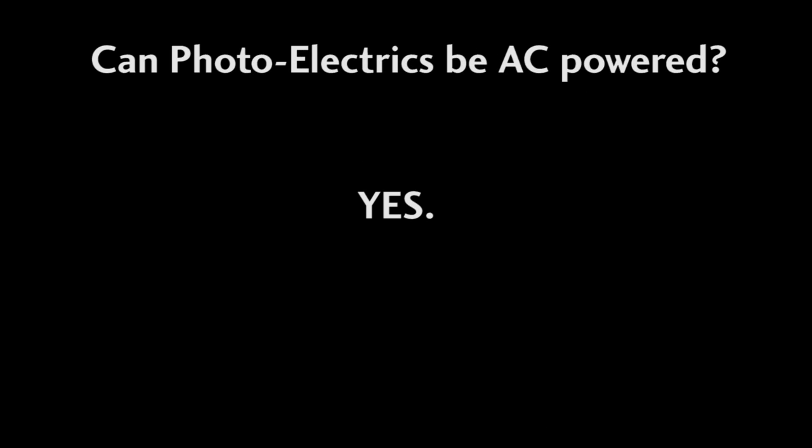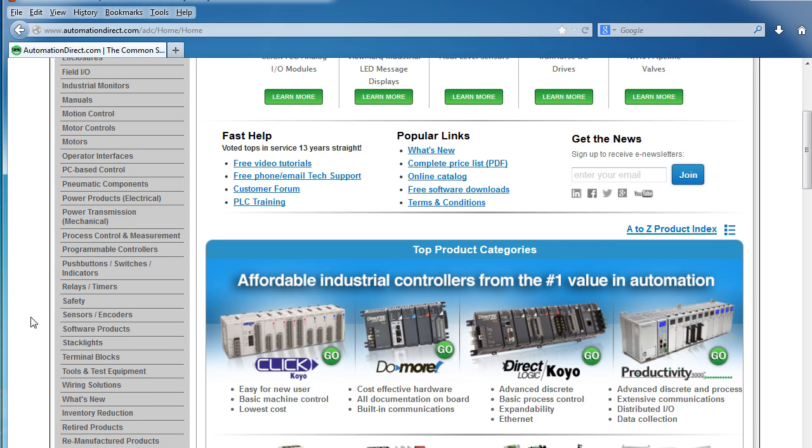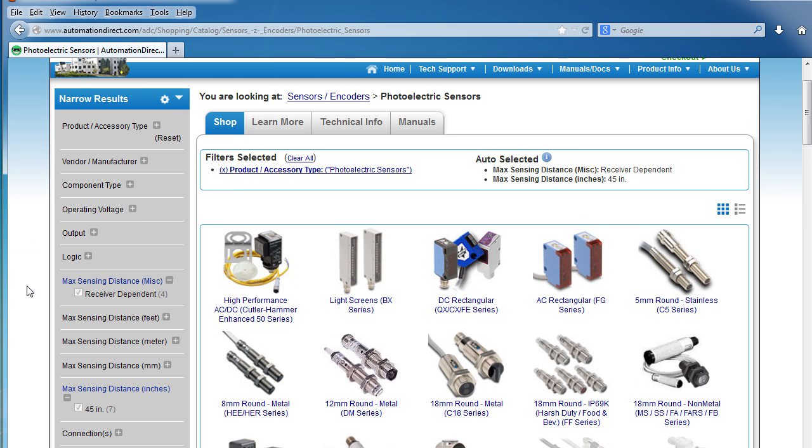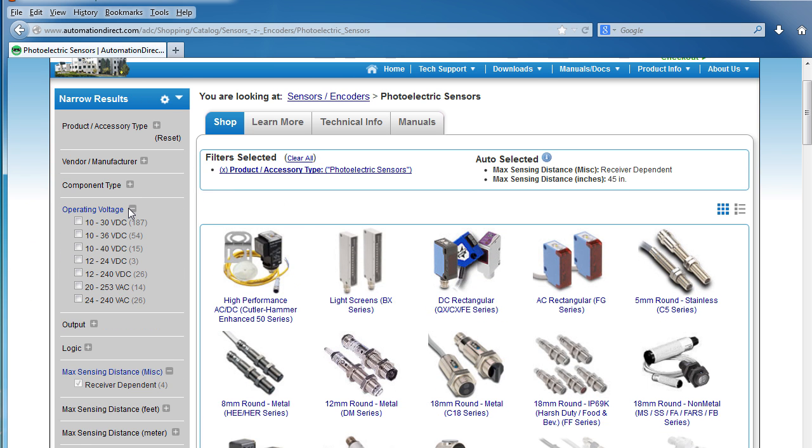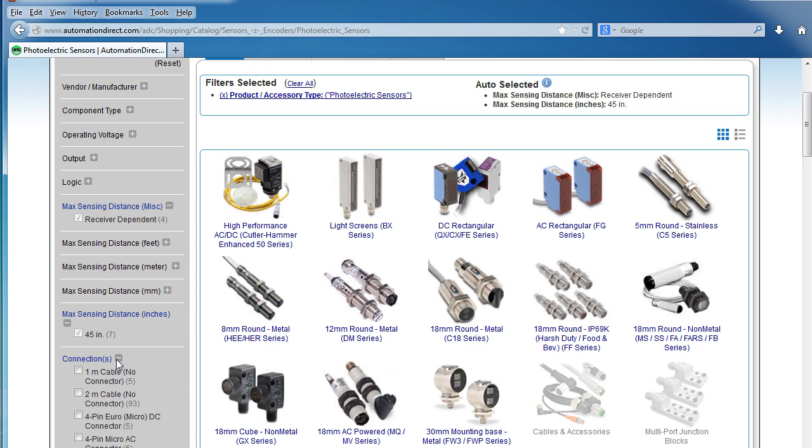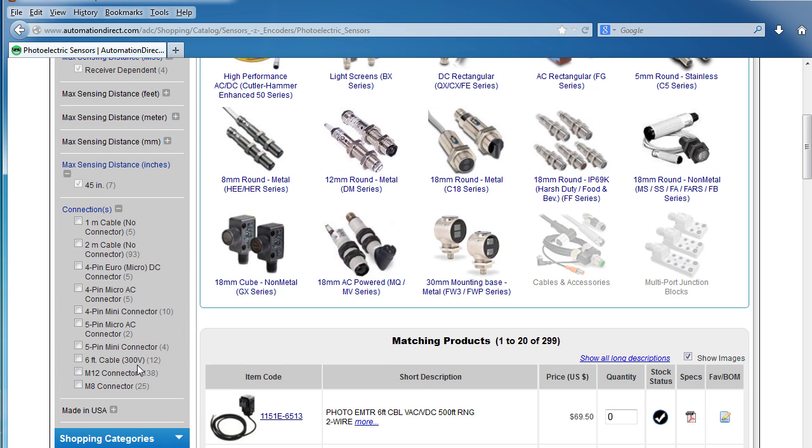Photoelectric sensors are available in AC powered models. In fact, if you go to the Automation Direct website and select Sensors and click on Photoelectric Sensors, the parametric search allows you to search on operating voltage. Of course, you can also search on the type of sensor, the kind of outputs it includes, the logic levels, and the max sensing distance in feet, meters, or millimeters, and you can even specify what kind of connection the sensor has. This parametric search makes selecting the photoelectric sensor you need really quick and easy.